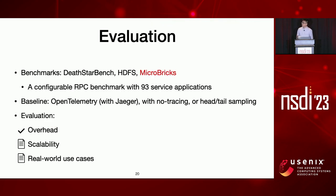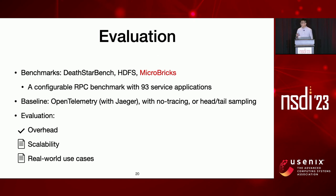We evaluate Hindsight on several benchmarks: a desktop benchmark, HDFS, and to test scalability we developed a configurable RPC framework called Macrobricks. Macrobricks is constructed with 93 service applications based on open-source Alibaba trace data, and we run it on a private cluster. Our baseline is OpenTelemetry configured with the Jaeger tracing system. We compare retroactive sampling with head and tail sampling mechanisms, and also with a no-tracing case to measure overhead. In this talk I focus mostly on overhead; you can check our paper for details of other evaluations.